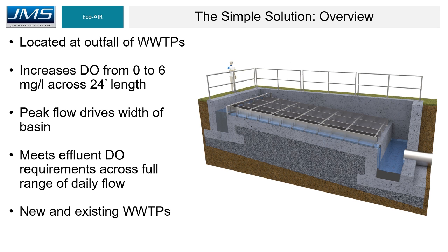The low profile cascade aerator is found at the outfall of wastewater treatment plants. We guarantee an increase in DO from zero to six milligrams per liter across 24 feet of length, with only two feet of fall from beginning to end. Peak flow determines the width of the LPCA, which in turn drives the width of the basin and concrete. The DO effluent requirement will be met across the full range of daily flow — if sized for 6 MGD, it will still achieve the effluent DO requirement at 2 MGD. The LPCA can be inserted into both new and existing wastewater treatment plants.